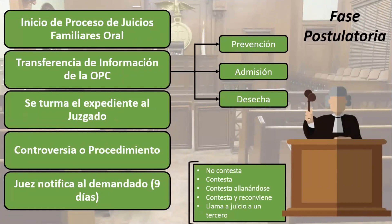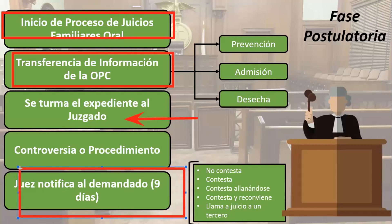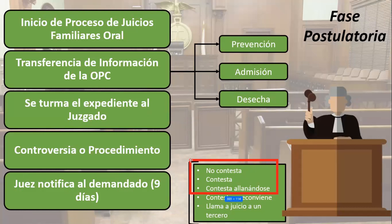En la fase postulatoria, presentamos nuestra demanda en la Oficialía de Partes Común, que la remite al juzgado correspondiente en razón de turno. Se resuelve si admite, previene o desecha. En el caso de admisión, se notifica a la parte demandada dándole un plazo de nueve días para contestar. La parte demandada podrá no contestar (allanarse), contestar, allanarse en el escrito de contestación, contestar y reconvenir, o llamar a un tercero a la controversia.